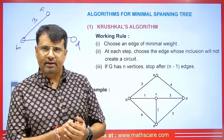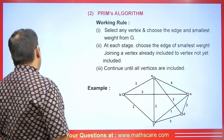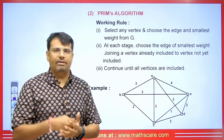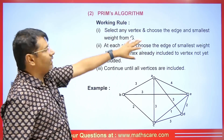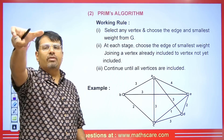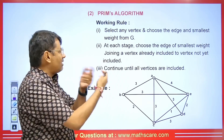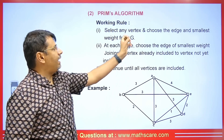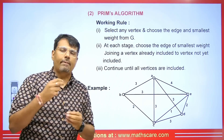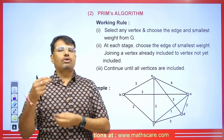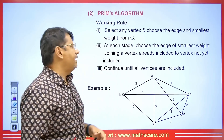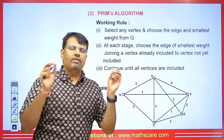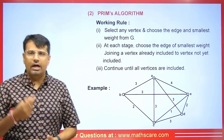Let's move forward. We will talk about Prim's algorithm. The concept here is a bit different. In Prim's algorithm, you select any vertex — you can choose any vertex to start. Then, at each stage, choose the edge of smallest weight connected to the already-included vertices. Continue until all vertices are included.